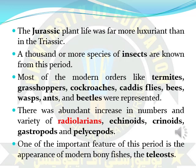In the Jurassic time period, plant life was more luxurious than in the Triassic time period. Thousands of new insect species were known in that time period. Many modern orders of termites, grasshoppers, cockroaches, caddisflies, bees, singing wasps, and beetles were also evolved.